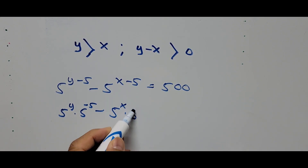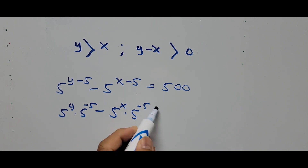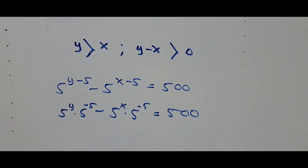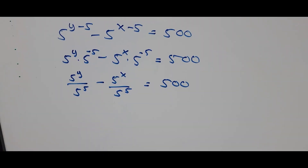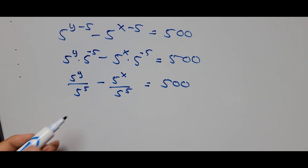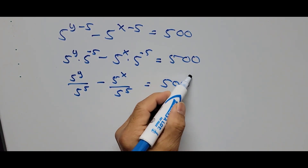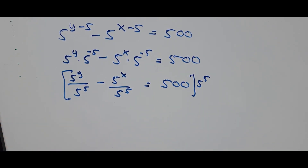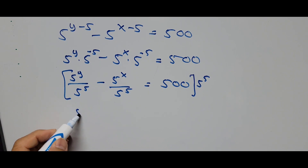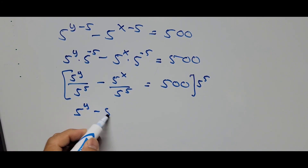Simplifying further: minus 5 raised to the power of x times 5 raised to the power of negative 5 equals 500. This becomes 5^y divided by 5^5 minus 5^x divided by 5^5 equals 500. To get rid of the denominator 5^5, we multiply the whole equation by 5^5. The equation now becomes 5^y minus 5^x equals 500 times 5^5.